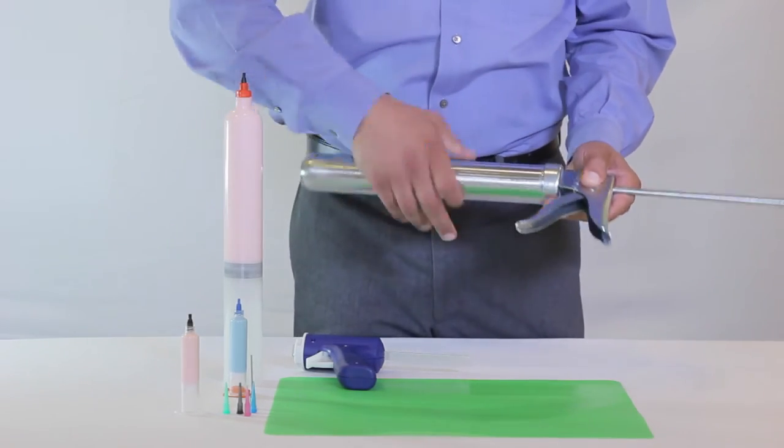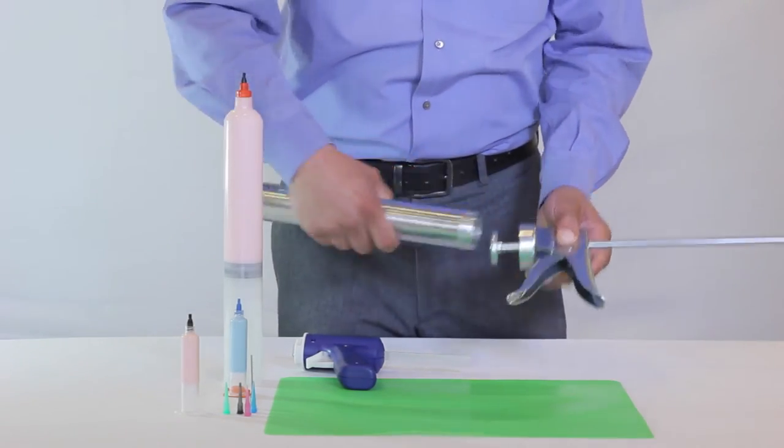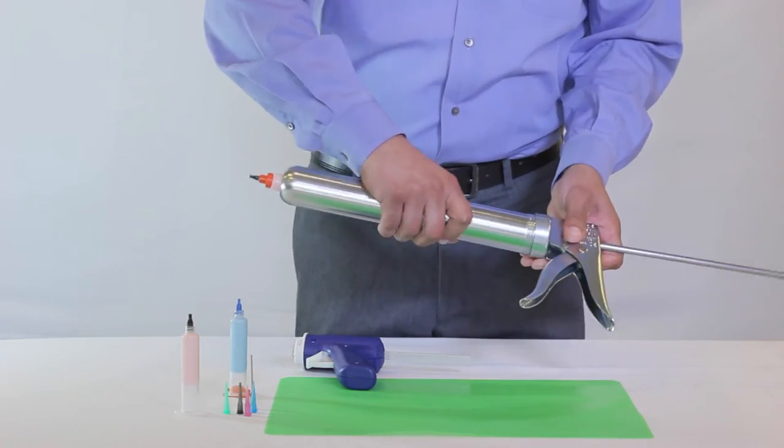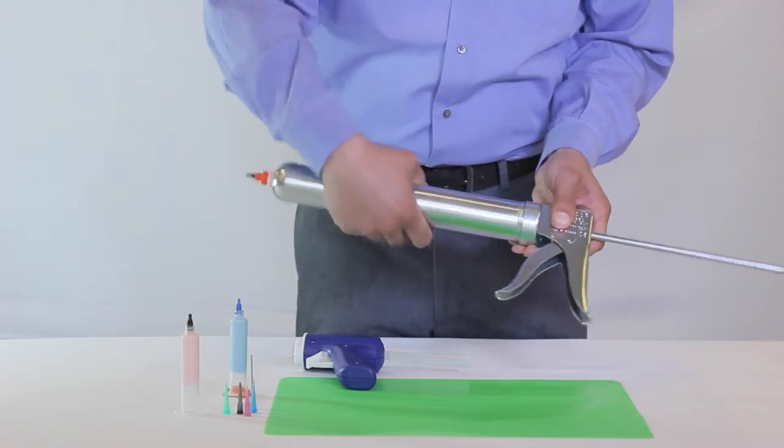Unscrew the cartridge retainer and insert your pre-filled cartridge of material. Tighten the cartridge retainer to the handle by twisting until it is secure.